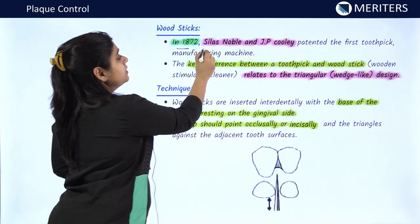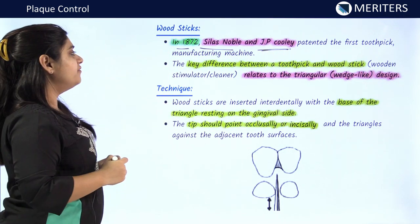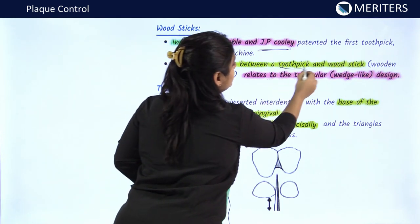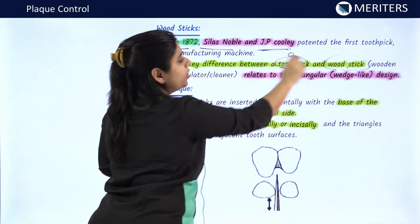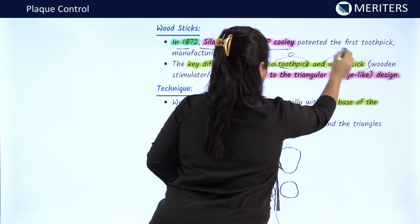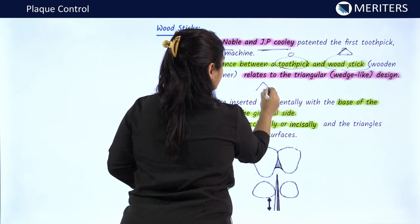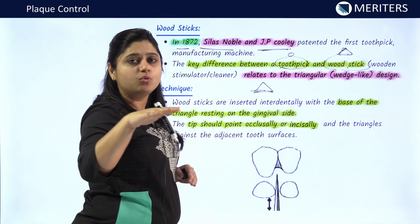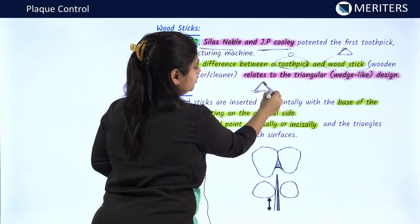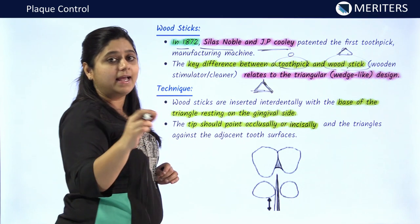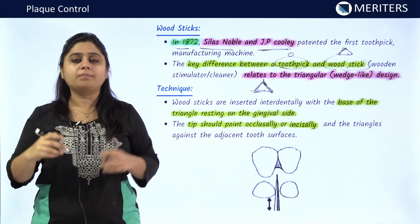In 1872, Silas Noble and JP Cooley were the scientists who first patented the toothpick manufacturing machine. The key difference between a toothpick and a woodstick is that the body of the toothpick is circular while the woodstick body is triangular or wedge-shaped. When inserting a woodstick, the base of the triangle should face the gingiva, with the tip pointing occlusally and incisally, then inserted into the embrasure area to clean between the teeth.